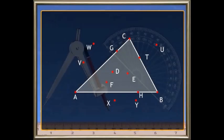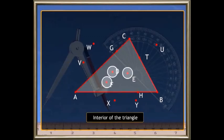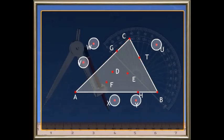If we have some points like this, what do we call them? The points inside the triangle are called the interior of the triangle, and the points outside the triangle are called the exterior of the triangle.